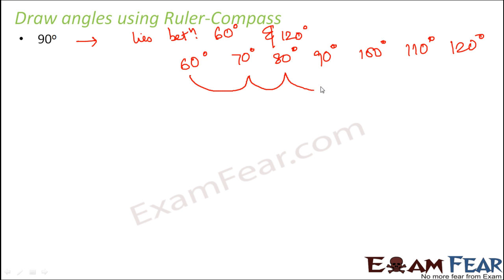So if you see from 60, three jumps, you reach 90. From 120, one, two, three jumps, you reach 90. So 90 is exactly midway between 60 and 120.